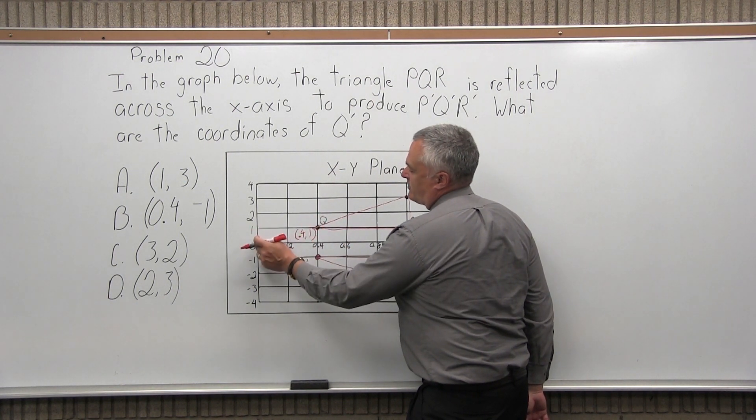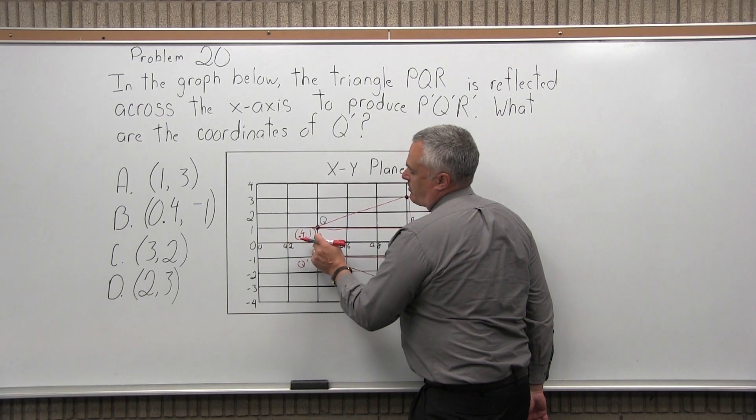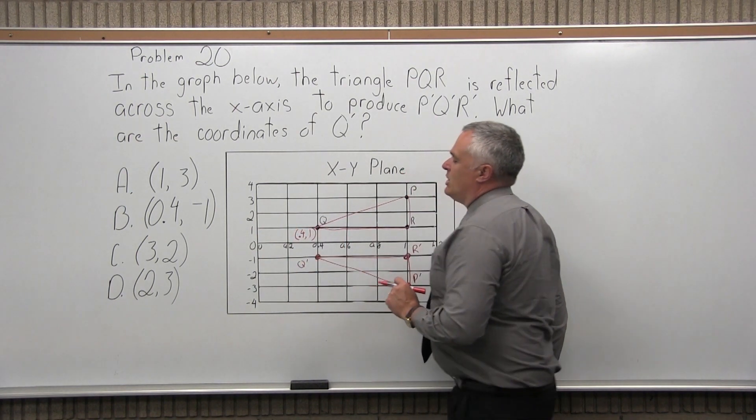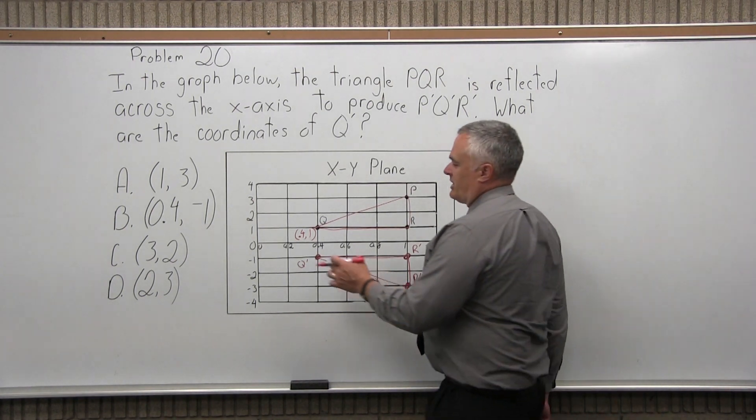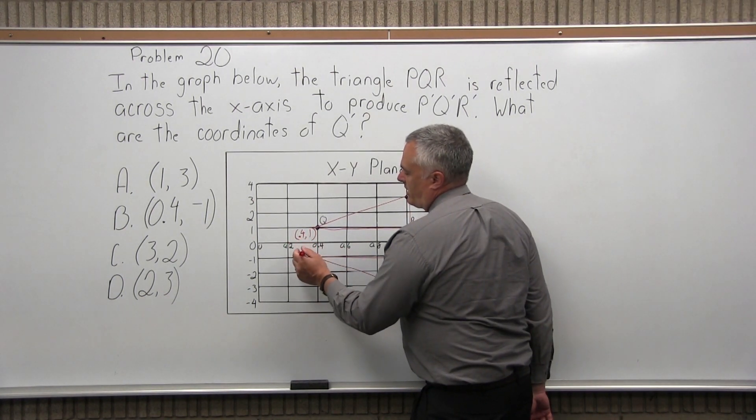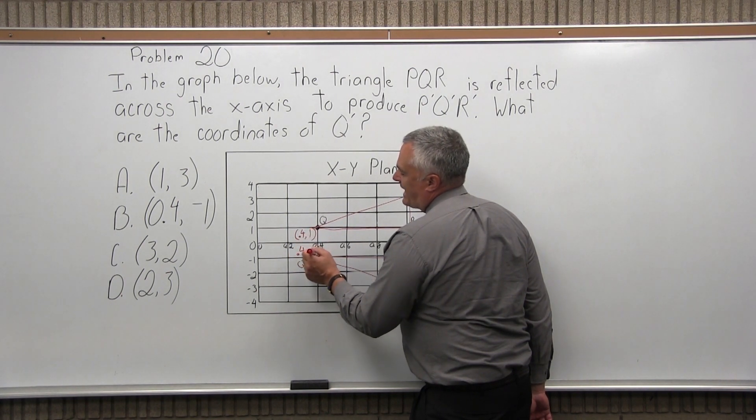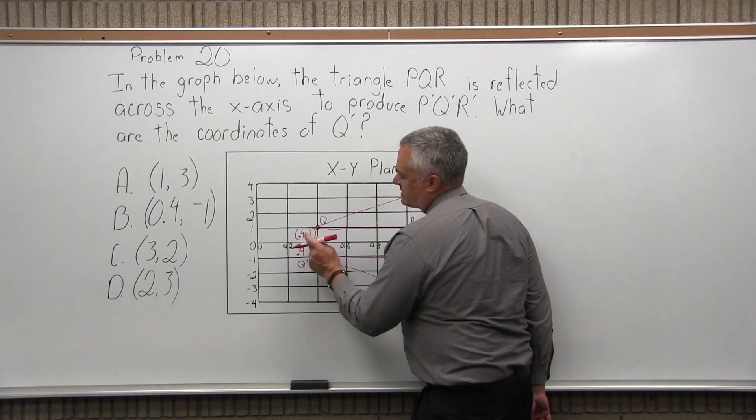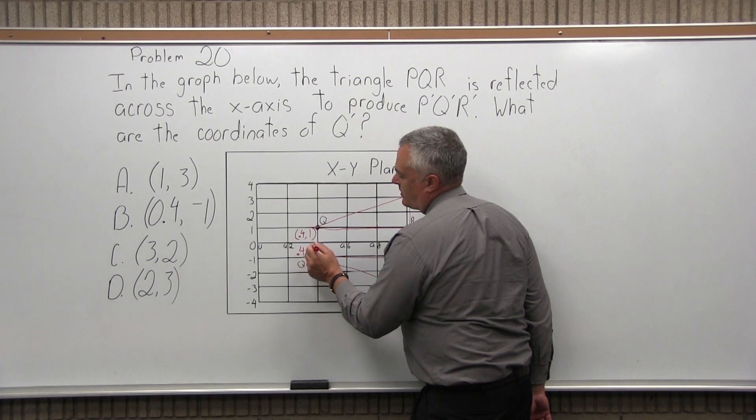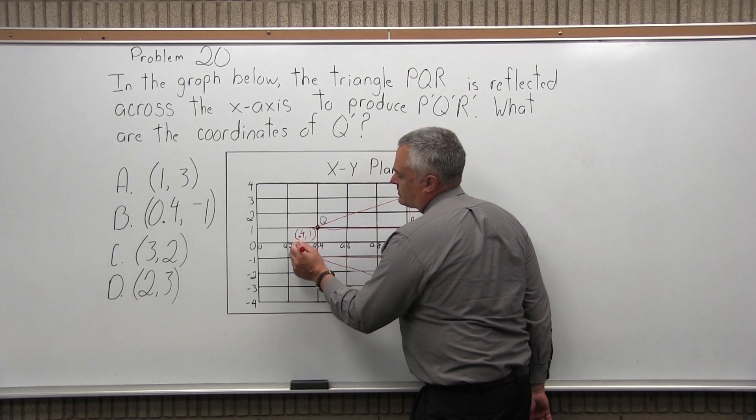And again, starting from the zero point, I went over 0.4 on my number scale here and then up one. So now Q prime, if it's a reflection, I still go over 0.4 to get to Q prime, but now I go down one if it's reflected across the horizontal. So 0.4 down one or minus one.